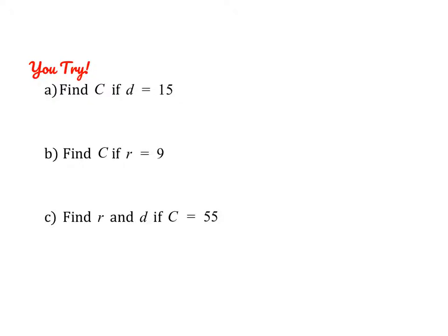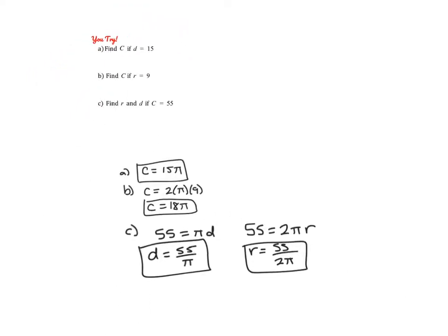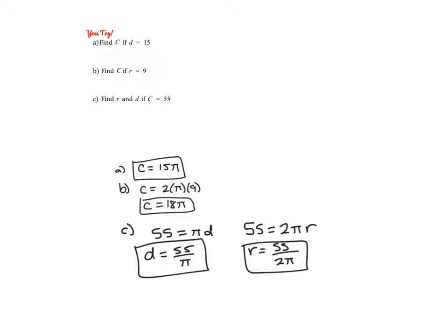Go ahead and pause the video and give this problem a try. For the first one, C equals pi times D, so C equals 15pi. For the second, C equals 2 times pi times R, so 18pi. When given the circumference, divide both sides by pi to find D, or divide by 2pi to find R. Note that you can't simplify when 55 is not divisible by 2.